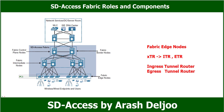The anycast gateway means, for example, interface VLAN 1 with IP address 192.168.1.1/24 configured on all fabric edge nodes for connected endpoints. When traffic is received from PC1, the fabric edge queries the mapping server or mapping resolver to find the destination RLOC, then encapsulates traffic from the ingress tunnel router to the egress tunnel router, where decapsulation occurs and the original packet is delivered.